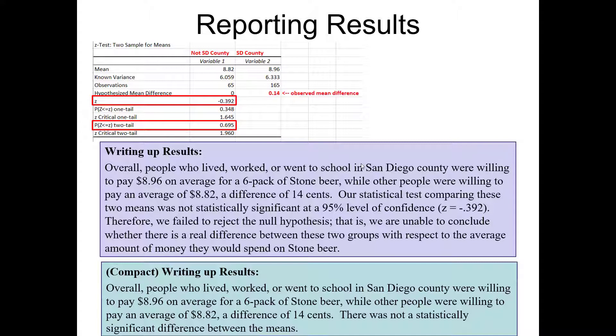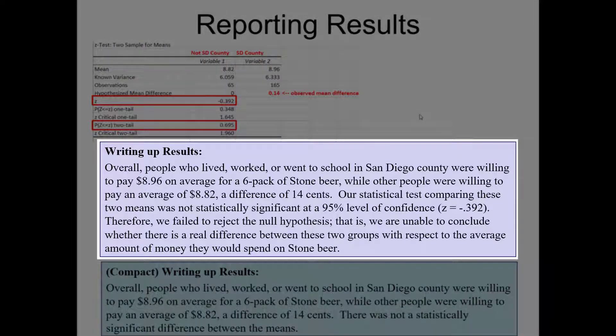How do we actually report these results? In our verbose results, we would write: Overall, people who lived, worked, or went to school in San Diego County were willing to pay $8.96 on average for a six-pack of Stone beer, while other people were willing to pay an average of $8.82 — a difference of 14 cents. Our statistical test comparing these two means was not statistically significant at a 95% level of confidence, Z equals negative 0.392. Therefore, we failed to reject the null hypothesis — we are unable to conclude whether there is a real difference between these two groups with respect to the average amount of money they would spend on Stone beer.